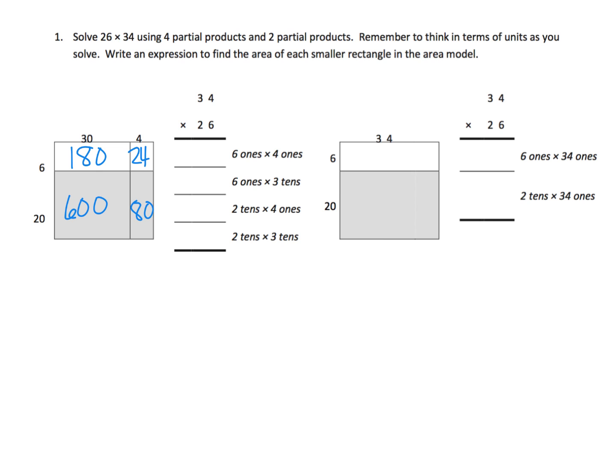So what are we supposed to do? The idea is 6 times 4 goes right here, and we see that 6 times 3 tens goes right here, so it's 180. And then we see 20 times 4 ones, so 2 tens times 4 ones is 80. It goes right there, and then 2 tens times 3 tens equals 600, and it goes right there. And then we add those partial products right here, so going in vertically.